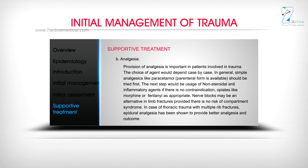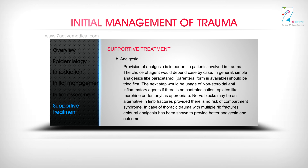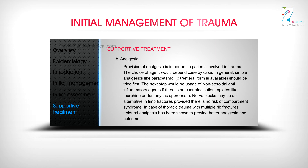Analgesia: provision of analgesia is important in patients involved in trauma and the choice of agent depends on the case. Simple analgesics like paracetamol (available in parenteral form) should be tried first, followed by non-steroidal anti-inflammatory agents. If there is no contraindication, opiates like morphine or fentanyl may be used. Nerve blocks may be an alternative in limb fractures provided there is no risk of compartment syndrome. In thoracic trauma with multiple rib fractures, epidural analgesia has been shown to provide better analgesia and outcome.